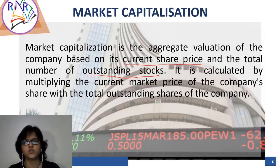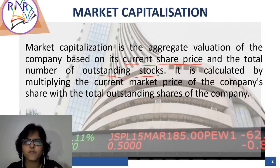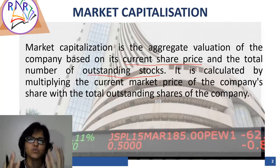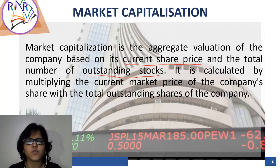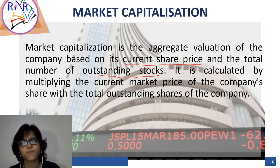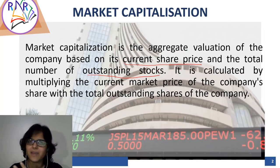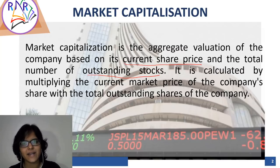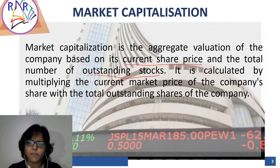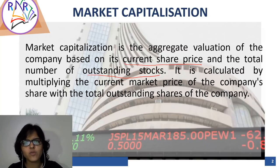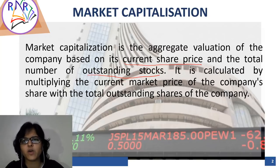Let us understand the relevance of these two terms. Outstanding stocks simply means the number of shares which the company has issued till date. Why would a company issue shares? There could be a variety of reasons - maybe the company wants to come up with some expansion plan, or maybe the company wants to repay its debts. Agar ye sab cheezein karni hain, toh how can they raise funds? Simple process hota hai - the company will have to come up with an IPO.